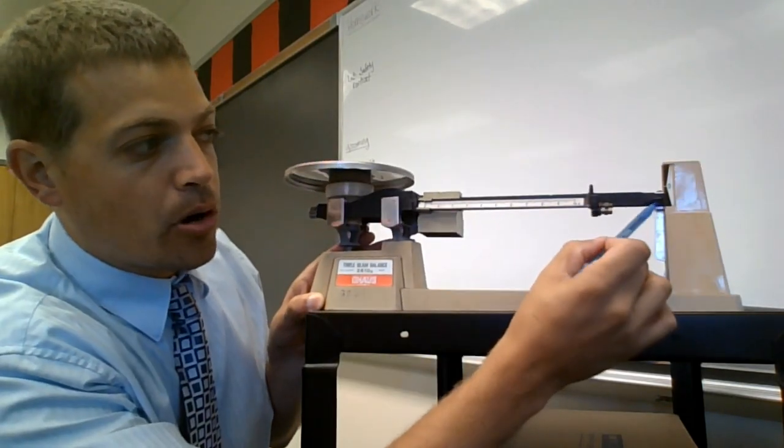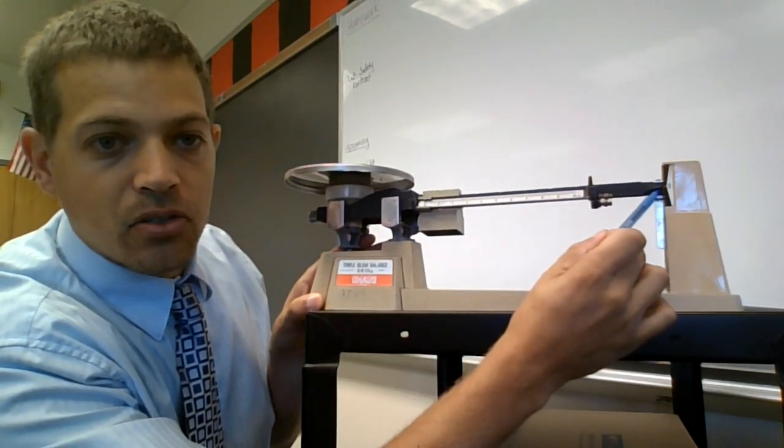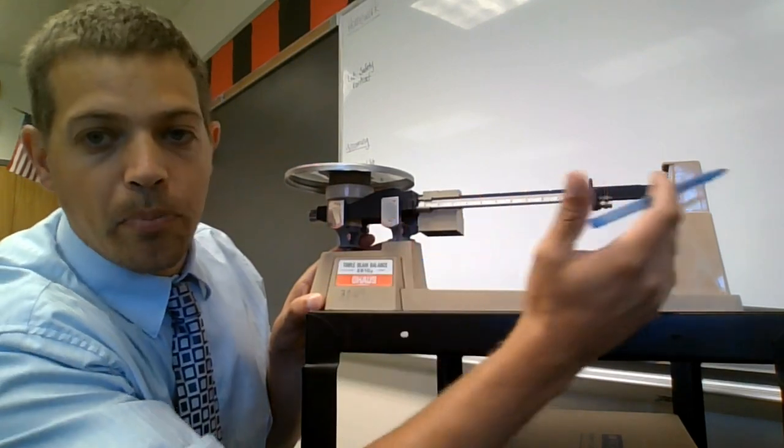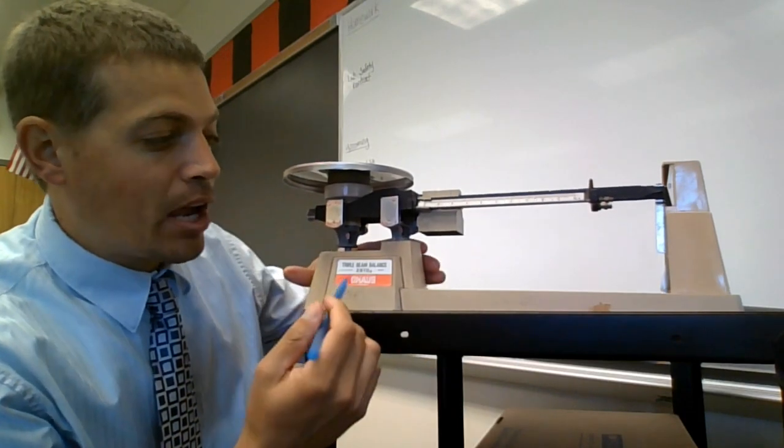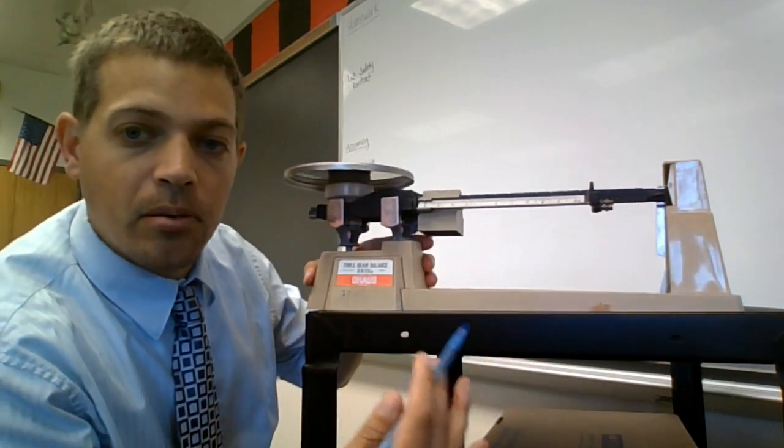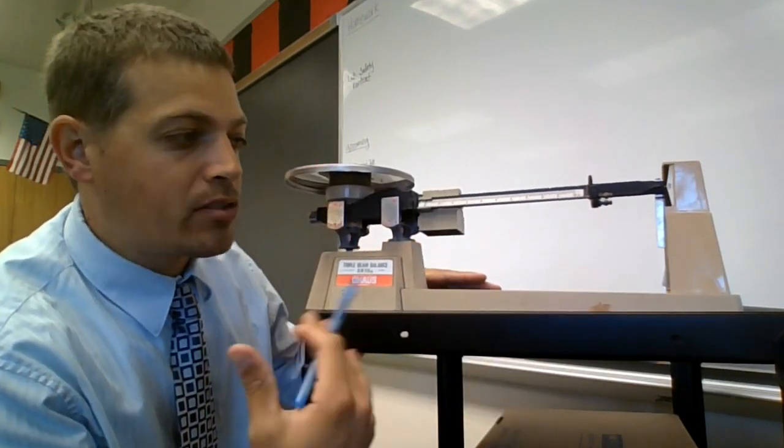We also have our indicator or pointer. That's going to tell us when we have put the right amount of weight to balance our objects. So there we can tell if our mass is correct. And last but not least, we have our base. Our base is going to be where we carry it and what provides the support.